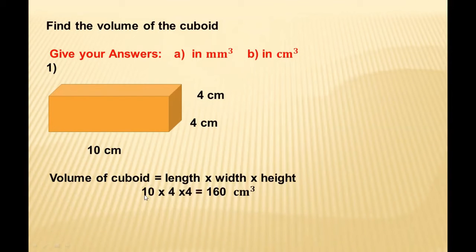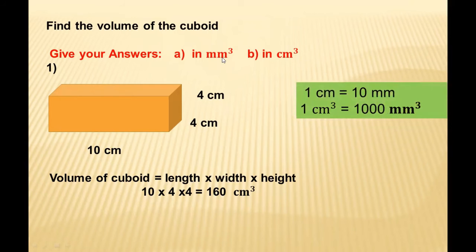When we multiply 10 × 4 × 4, we get 160 cm³. That is the volume of this cuboid. If they ask you to change the answer into millimeter cubed, we know one centimeter equals 10 millimeters.